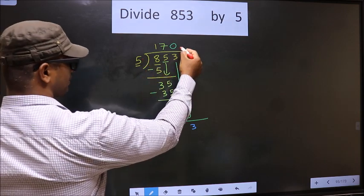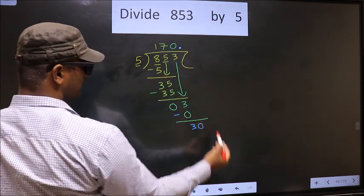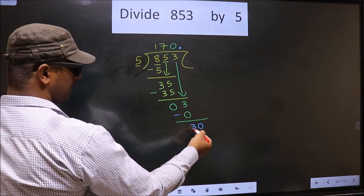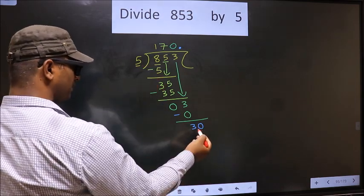So now you can put a dot and take 0 here. So here 30, here 5, when do we get 30 in the 5 table? 5 sixes are 30.